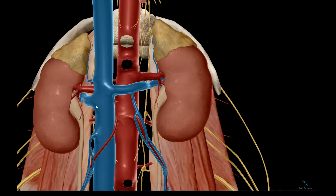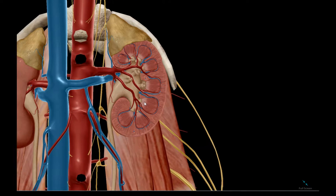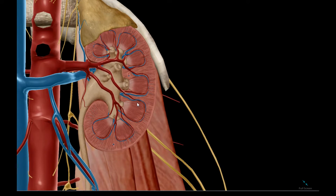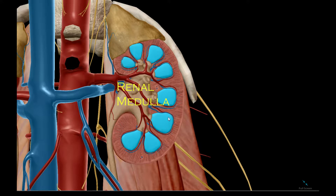The part of the kidney where the vessels enter and exit is called the hilum. If we dissect into the kidney, we see the outer portion called the cortex and the inner portion is called the medulla.